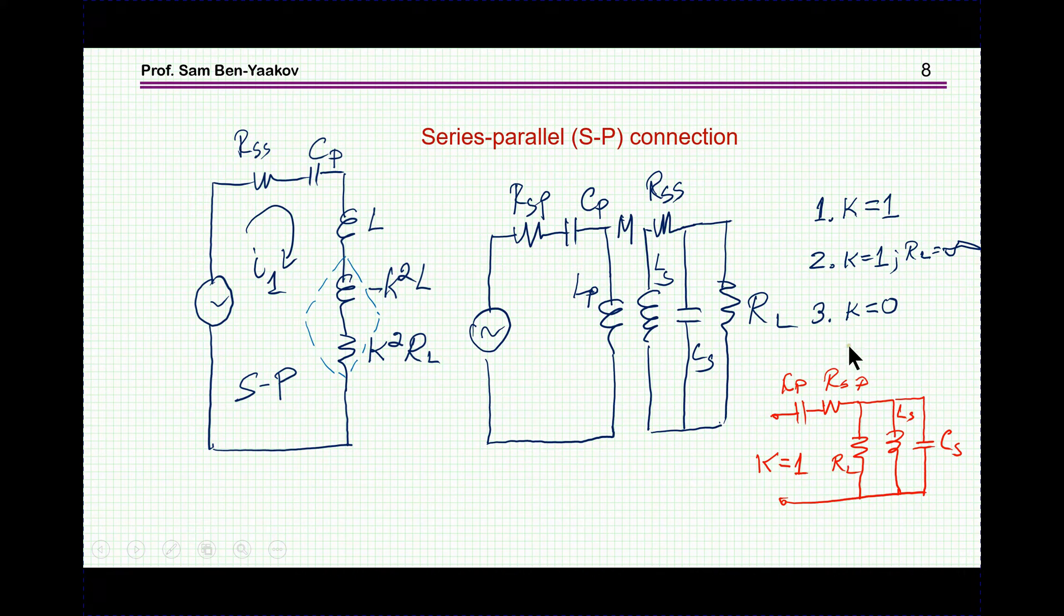Now, what happens with K is equal to 0? K equal to 0 means that these have no mutual inductance. The mutual inductance is 0, like, there is no connection between these, and we have only the primary. If we have only the primary, then we're going to have a resonant circuit, here it is, these two are in resonance, so, in fact, we should have just RSP, the positive resistance of the primary.